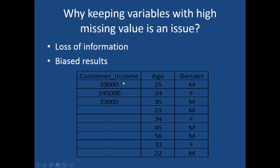Here is an example: we have data for customer income, customer age, and gender. If I use all three variables in the model where customer income has quite a number of missing values — out of nine observations, six of them are missing — those six observations where customer income is missing will be removed from the entire dataset. The model will only run on data where customer income is not missing.